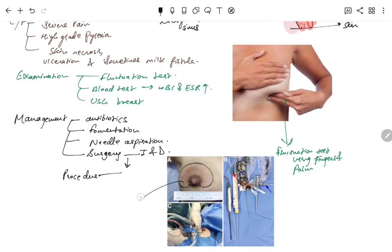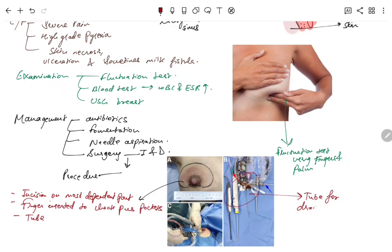IND, that is incision and drainage. There will be incision on the most dependent part. Finger is inserted to check purse pockets, and then tube is inserted for drainage in this abscess part.